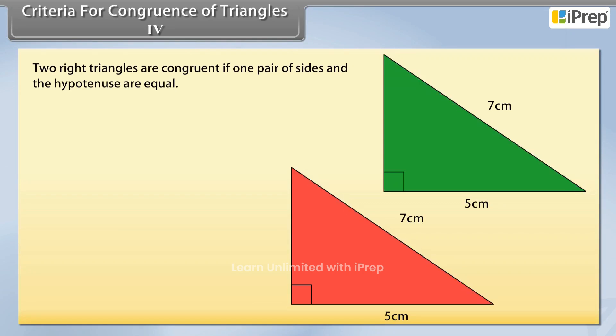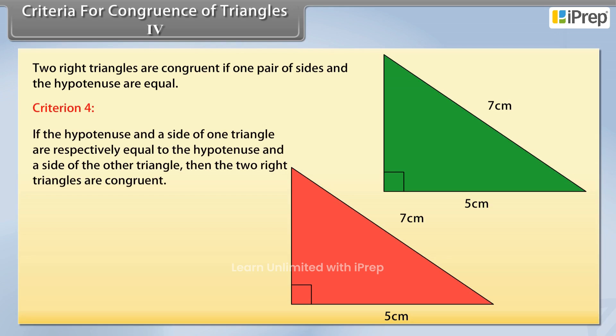Thus we have Criterion 4. If the hypotenuse and a side of one triangle are respectively equal to the hypotenuse and a side of the other triangle, then two right triangles are congruent.